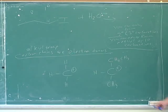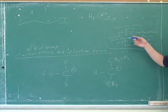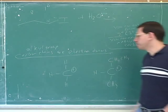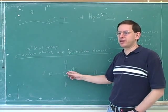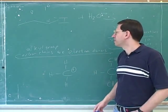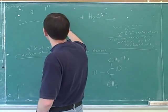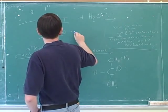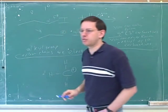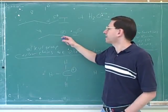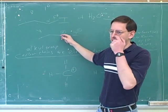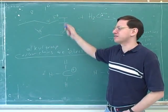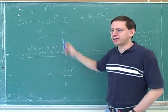Now we can see why we can't do an SN1 on this substrate. If we did do an SN1, the intermediate would be a primary carbocation. Nature says no — it's not going to let you form that primary carbocation; it's not stabilized enough. Therefore, it has never happened in the first place. The iodine can't leave because that would leave behind a primary carbocation, which nature does not allow.